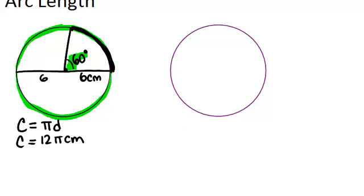So, 60 out of 360 is one-sixth of the whole circle. So, what that means is we want one-sixth of the whole circumference. So, we can take our circumference of 12 pi and multiply it by one-sixth. Our arc length will be exactly that.